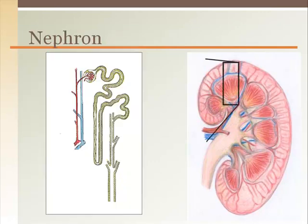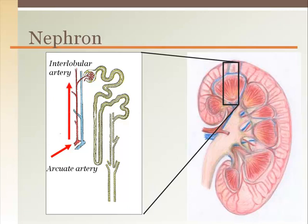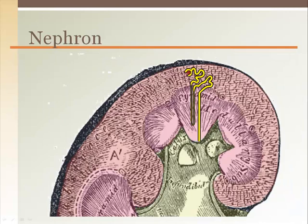The nephron is where all the filtering of the kidney occurs. Blood feeds into the nephron off the interlobular artery by an afferent arteriole. This goes to a specialized capillary bed called the glomerulus, where the blood is filtered. The whole nephron is partially in the renal cortex and partially in the medullary pyramids. The key to understanding how the kidney works is to understand the nephron.